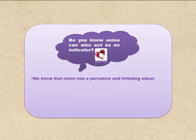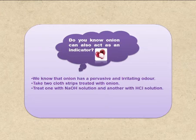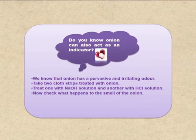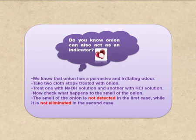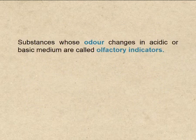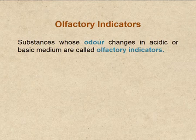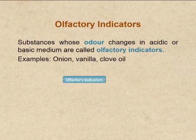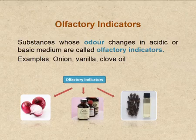Did you know that even onion can act as an indicator? Onion has a pervasive and irritating odor. If we take two cloth strips treated with onion — one treated with NaOH solution and another with HCl solution — the smell of onion is not detected in the first case, while it is not eliminated in the second case. Those substances whose odor changes in acidic or basic medium are called olfactory indicators. Examples of olfactory indicators are onion, vanilla, and clove oil.